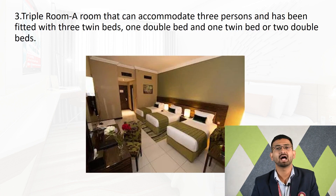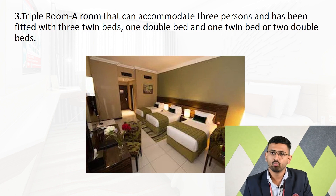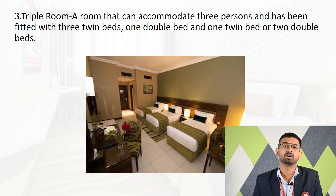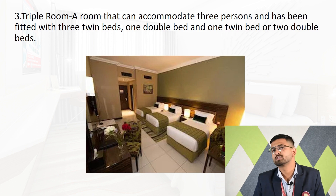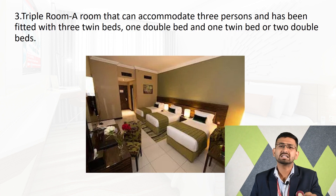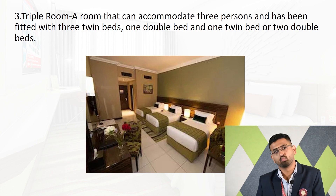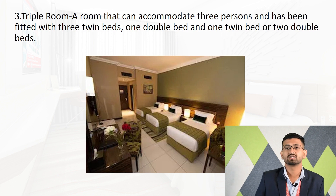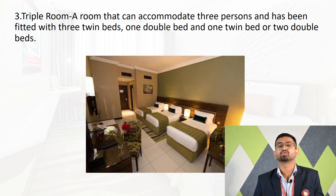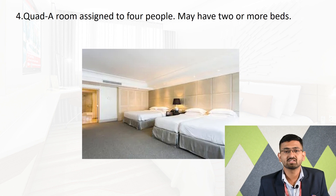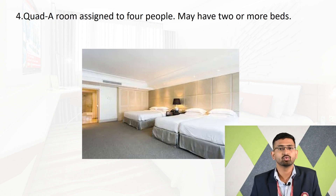Third is the triple room — a room that can accommodate three persons. It is fitted with either one double bed and one twin bed, or two double beds. The main purpose is to accommodate three people, and the room can have one single bed, one double bed, or two single beds combined. A room that can accommodate three persons is called a triple room.